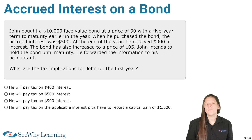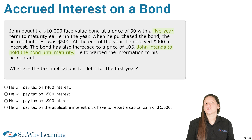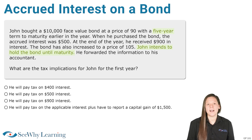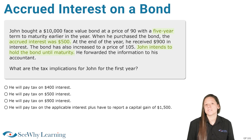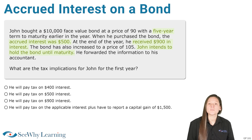In this scenario, John bought a five-year bond from another investor, and he intends to hold the bond until maturity, which means there will be no chance of a capital gain or loss until that time. The scenario says he paid $500 in accrued interest and received $900 in interest at the end of the year from the bond issuer. You are being asked what his tax liability would look like.